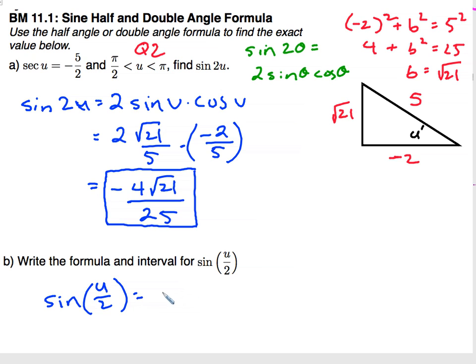The sine of u divided by 2, the half angle formula is plus or minus square root of 1 minus cosine of u divided by 2. And the interval is going to be half of the interval that we were given. So u is in between pi over 2 and pi. Well, if I cut this in half, my interval becomes pi over 4 and pi over 2.